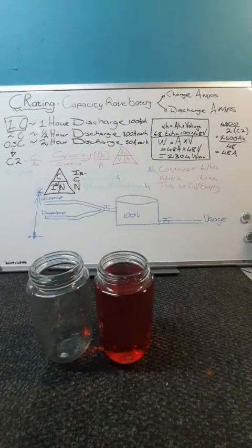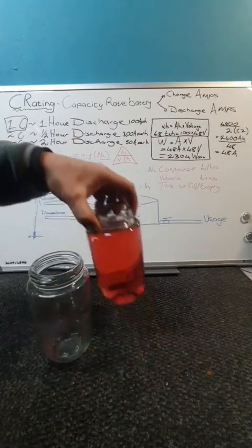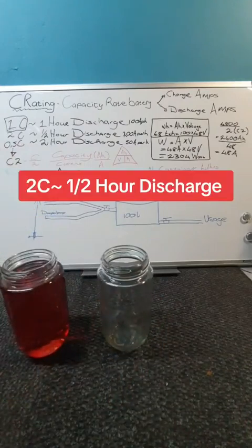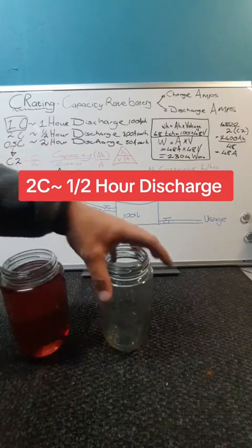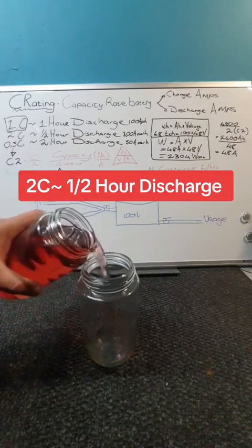Those 5.5 kilowatts of energy is gone. It can handle it but it's gone. A 2C battery can do it in a half an hour, so it all depends on what your application is.